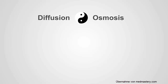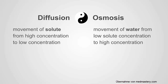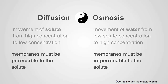So you have diffusion and osmosis. In diffusion, you have movement of solute from high concentration to low concentration. In osmosis, you have movement of water from low solute concentration to high solute concentration. In diffusion, the membranes must be permeable to the solute, while in osmosis, the membranes must be impermeable to the solute.